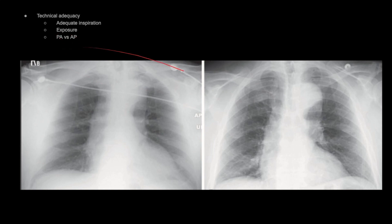PA versus AP: if I were to give you both of these, you should be able to tell me which one's PA and which is AP. It's a little bit of cheating because this one's labeled. But what's the difference between the radiograph on the left and the radiograph on the right? If you were to say that this heart kind of looks fuzzy and slightly bigger — that's the AP radiograph. The heart is magnified because it is further away from the detecting plate.